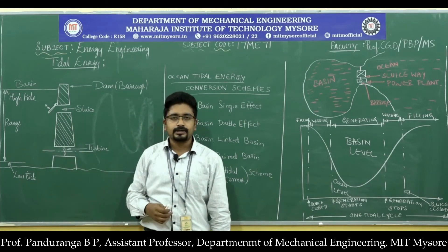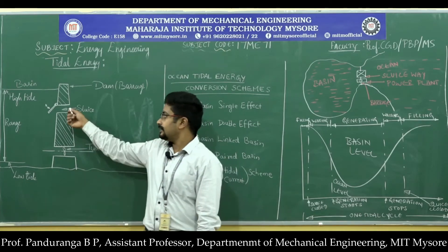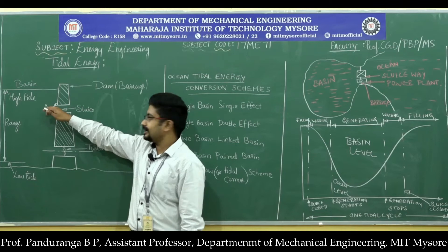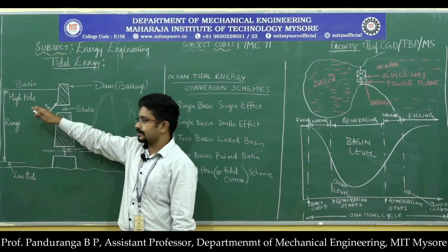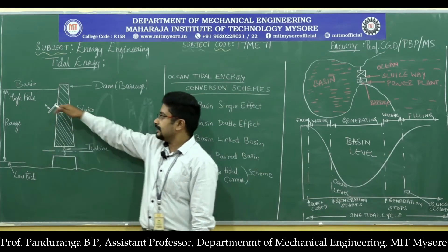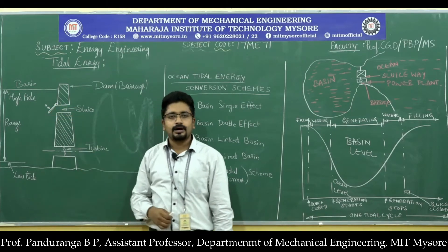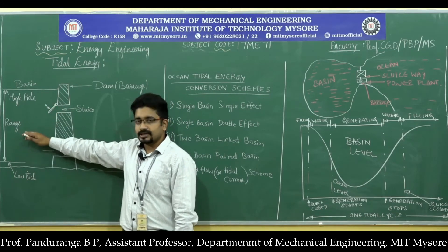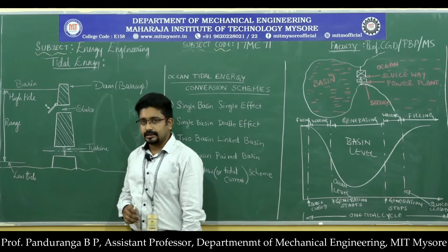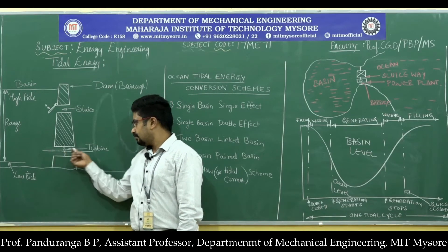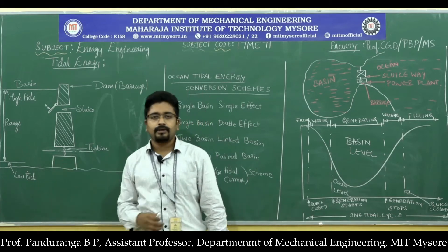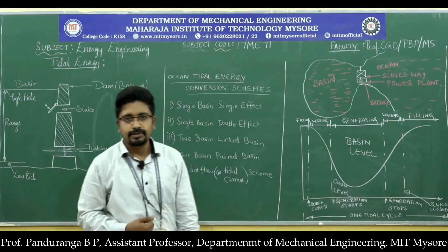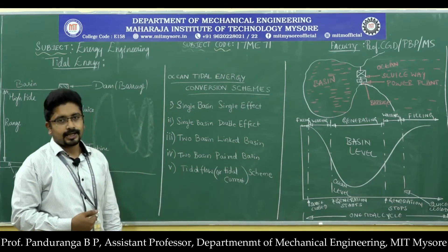The sluice gate is made to open automatically when the water level reaches the channel height. The water pushes the gate open and gets collected in the basin. As the water level in the ocean starts to reduce, the gate closes to stop water from flowing back out. Once sufficient water is stored in the basin and the ocean level reaches the low tide level, water is allowed to flow out through the turbines at the bottom. This produces mechanical energy, which is given to a generator to produce electrical energy.